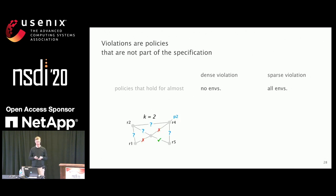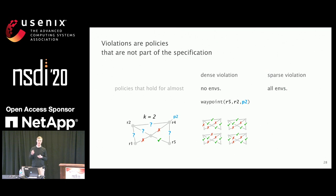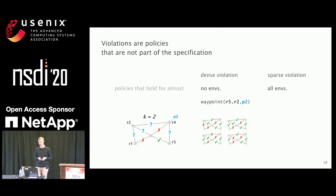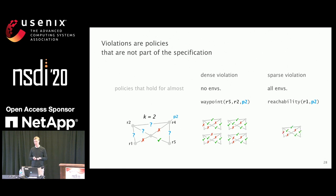A sparse violation, on the other hand, holds for almost all environments, and maybe for one or two environments this policy is violated. For example, consider a waypointing policy — that prefix P2 can be reached from router R2 via R5. Such a waypointing policy may be violated by four environments out of five, so if you randomly pick one, it's highly likely you'll pick an environment that violates it. But a reachability policy — that P2 is reachable from R1 — might only be violated by a single environment.